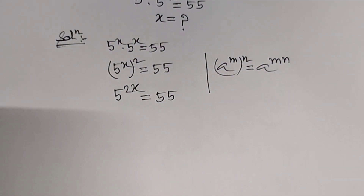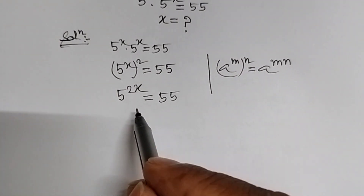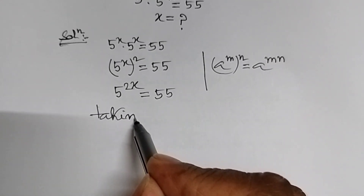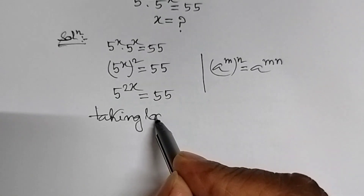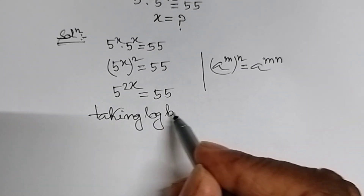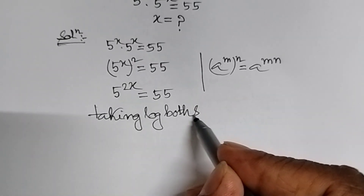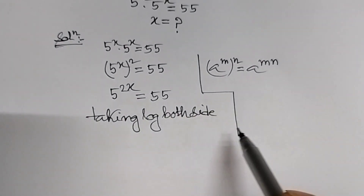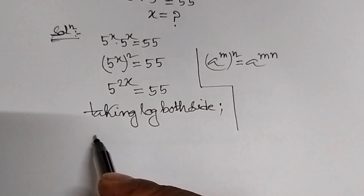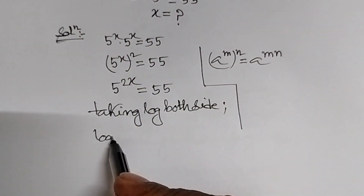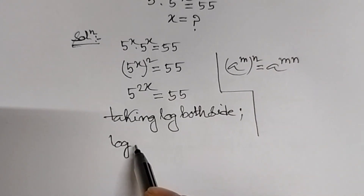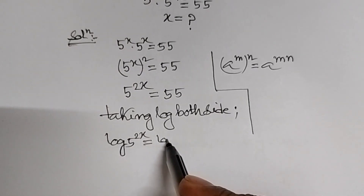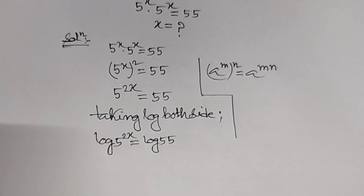Now, we will have to take log on both sides. Taking log both sides of the above equation, we get log of 5 power 2x equal to log of 55.